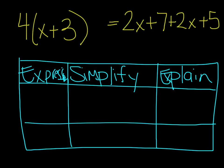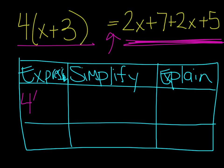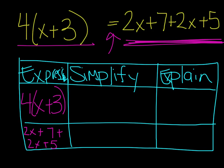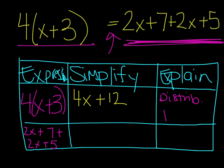One of my expressions is 4 times the quantity x plus 3, and the other is 2x plus 7 plus 2x plus 5. I need to figure out if these two expressions are equal to each other. For the first one, I'm going to apply the distributive property: 4 times x is 4x, and 4 times 3 is 12. The reason I can go from one expression to the other is the distributive property — that goes in the explain section.